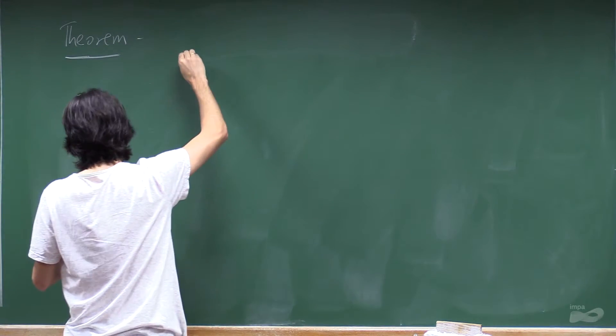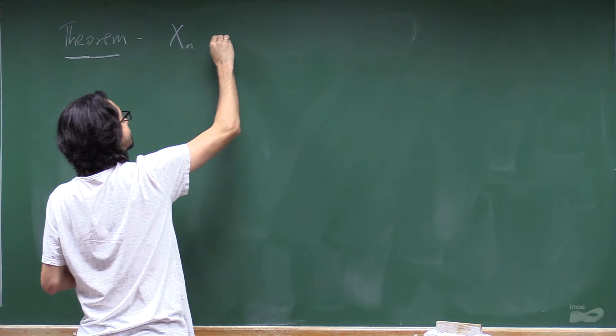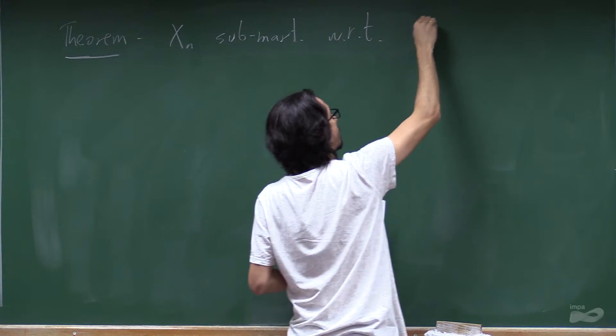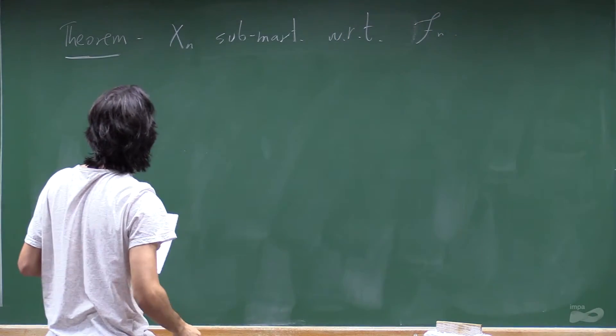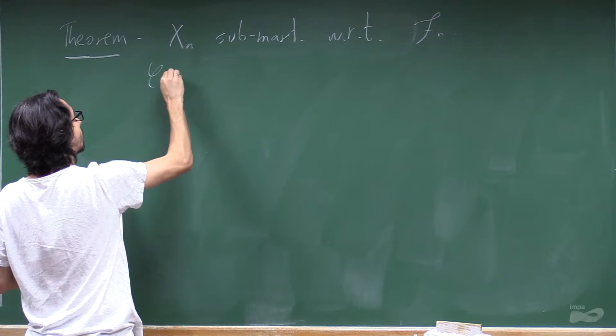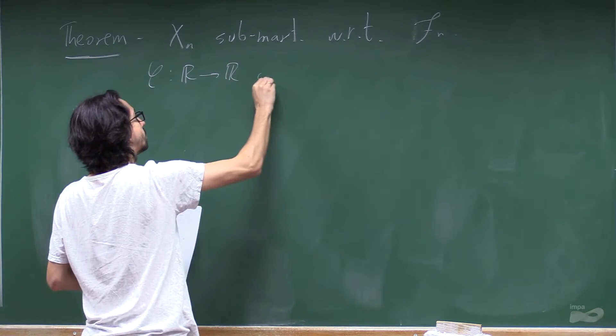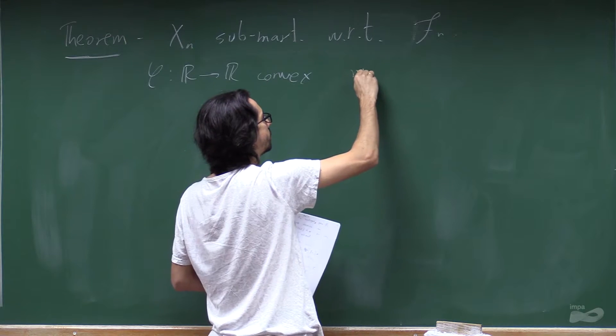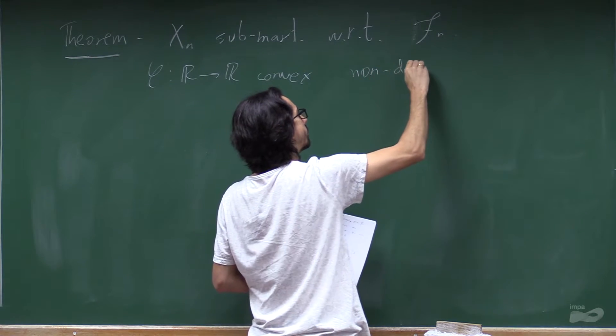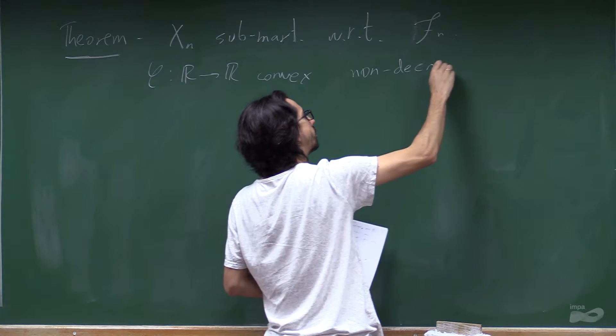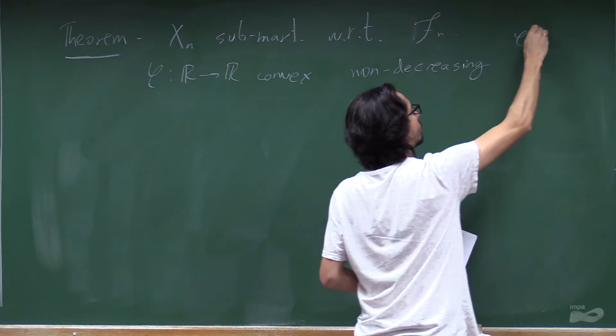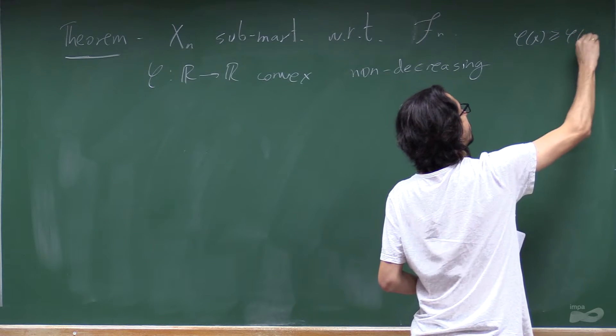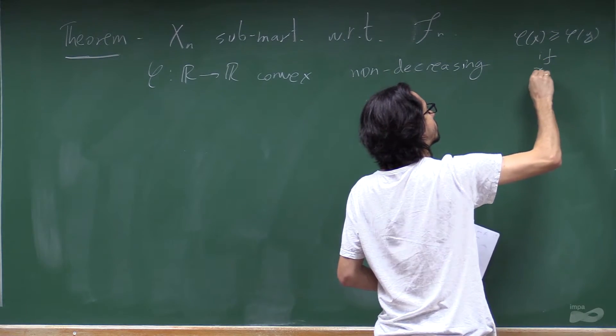So suppose that xn is now a sub-martingale with respect to fn, a filtration. Suppose that phi is convex, but also increasing or non-decreasing. This means phi of x is bigger or equal than phi of y if x is bigger or equal than y.